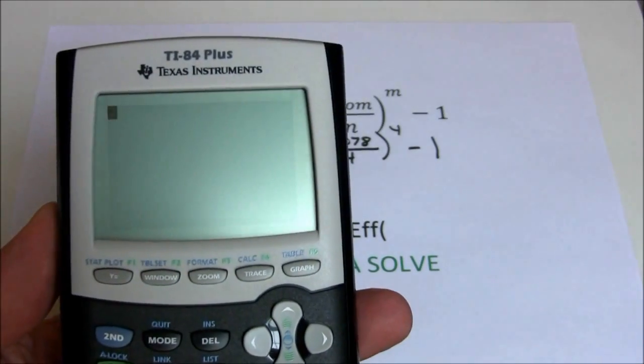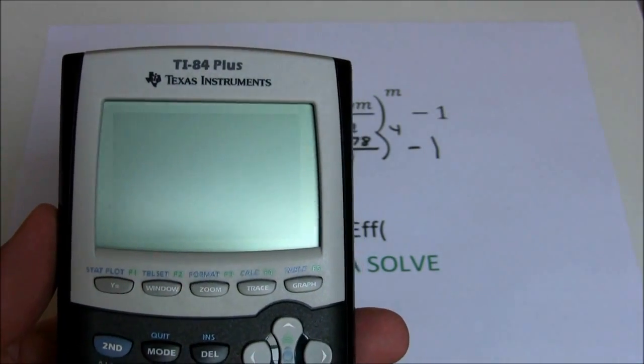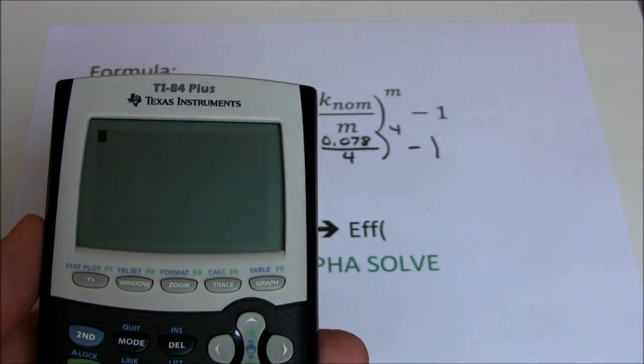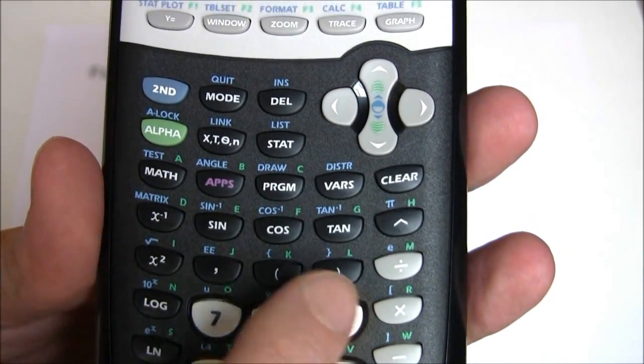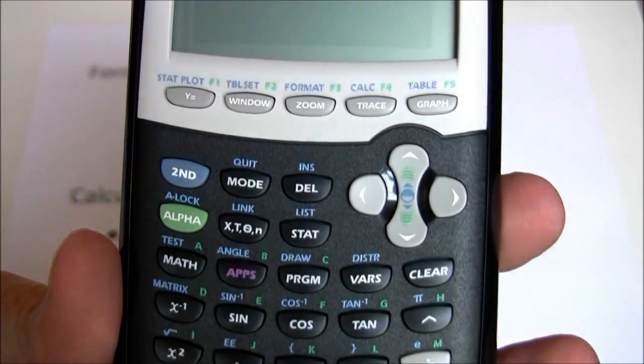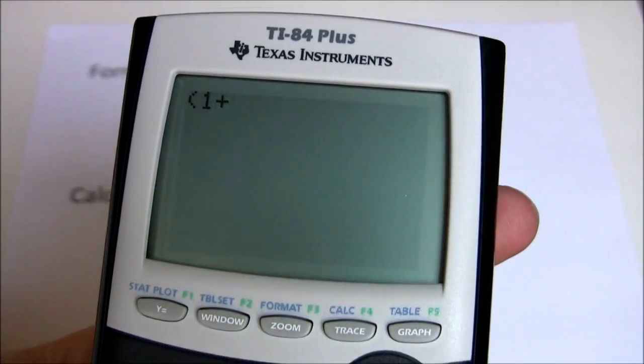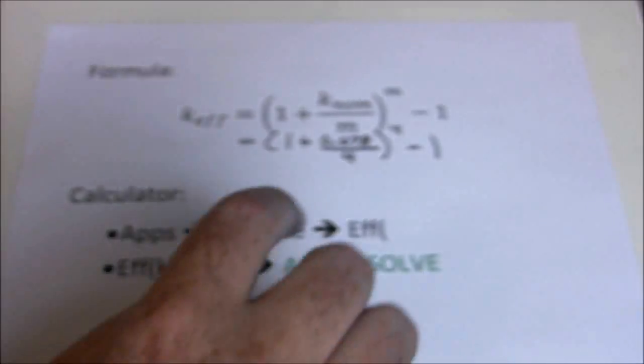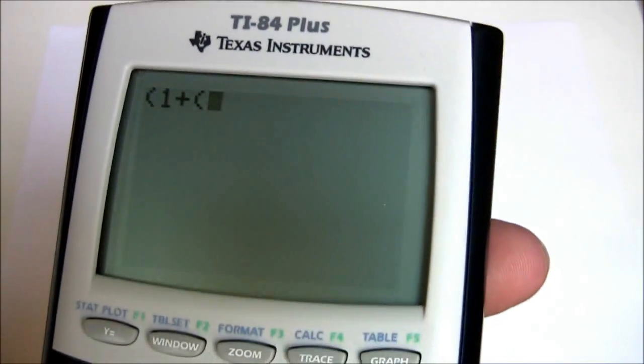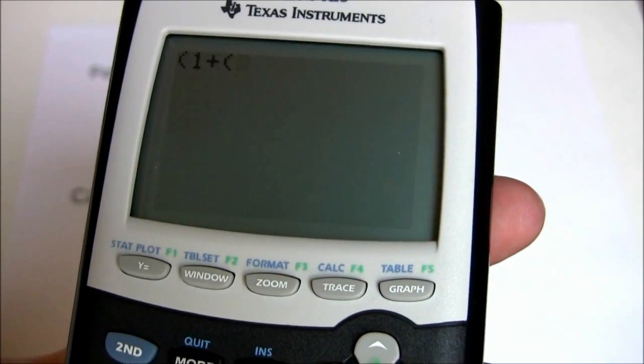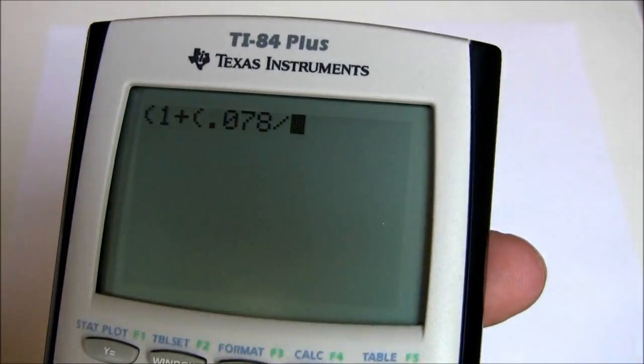We have our Texas Instruments 83 or 84 calculator with a blank screen. Now I'm just going to plug this formula in. Let's use parenthesis in order to preserve my order of operations. I'm going to start with an open parenthesis and just 1 plus. Then I'm going to do another parenthesis because order of operations say division comes first.